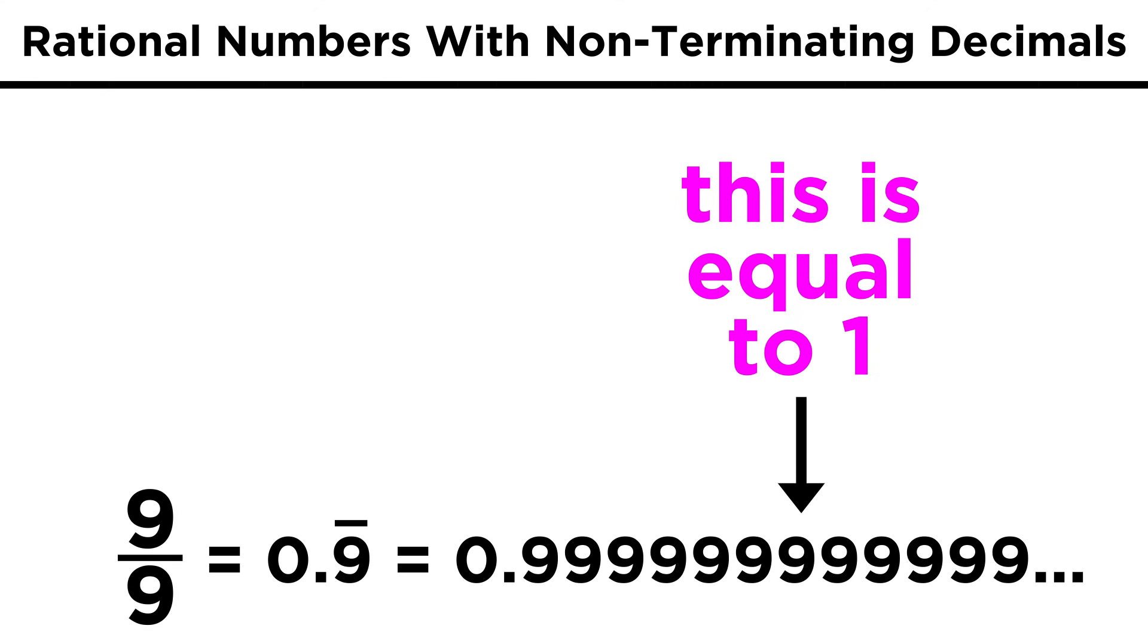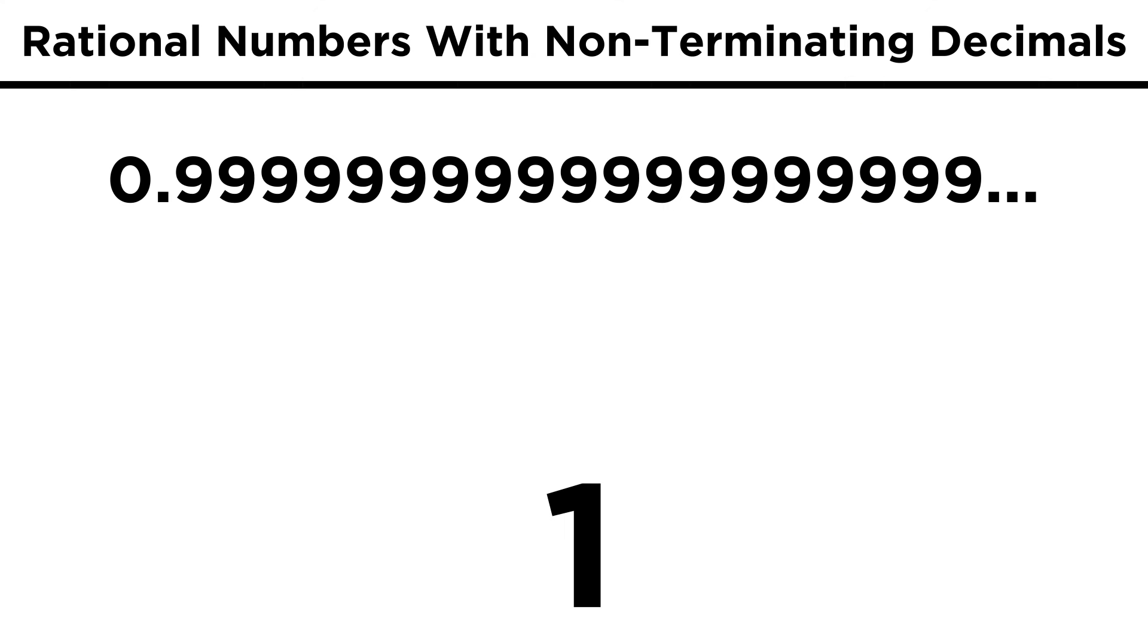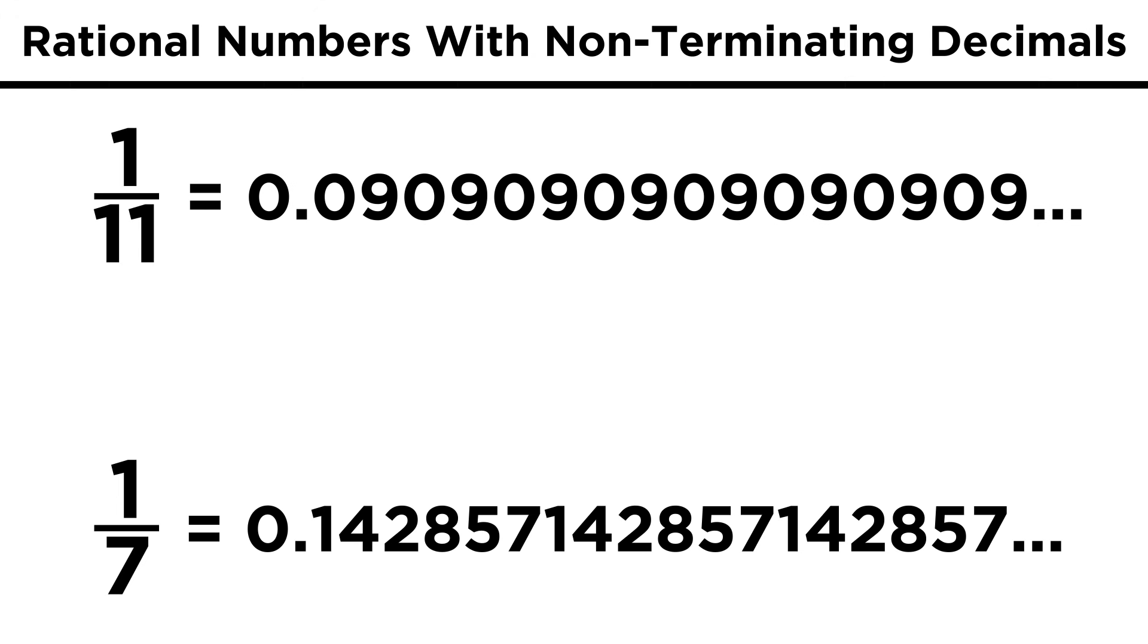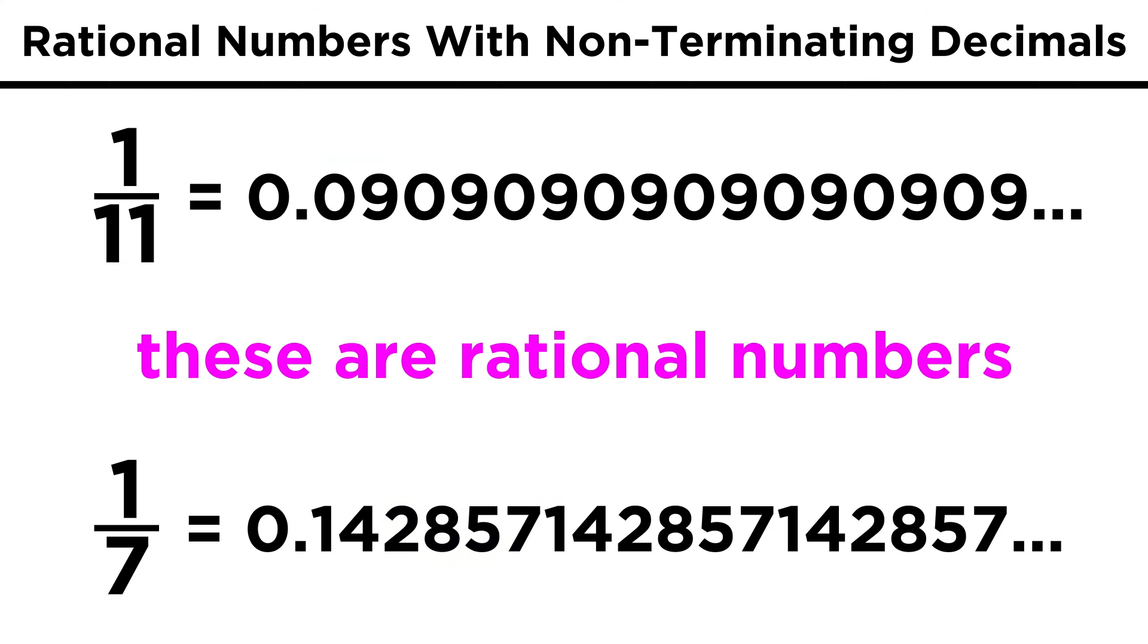To prove this, we can rationalize that if the nines extend forever, then there cannot be any number in between this number and one, and they therefore must be the same number. There are other numbers with non-terminating decimals in a pattern of two or three repeating digits, or more. These are all rational numbers that are simply the decimal versions of some fraction.